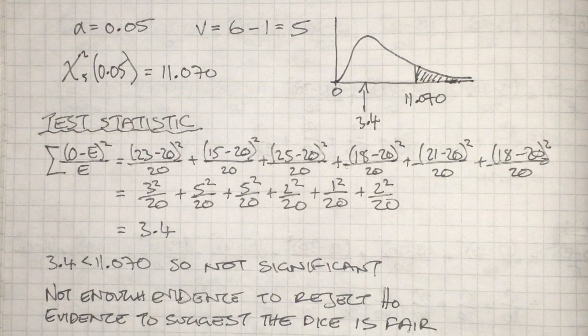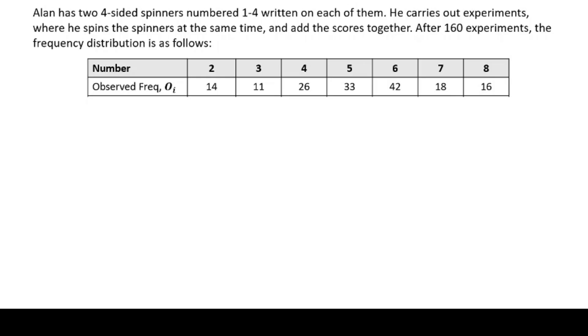Let's check another example. This time there's going to be a few more cells to work with. Alan has two four-sided spinners numbered 1 to 4. He carries out experiments where he spins them at the same time and adds their scores together. He does 160 experiments and has recorded his observed frequencies below.